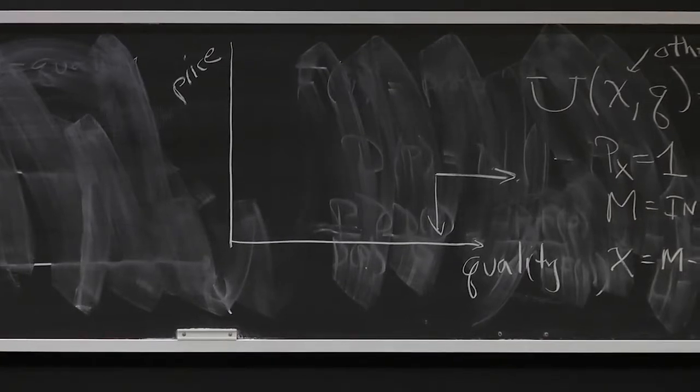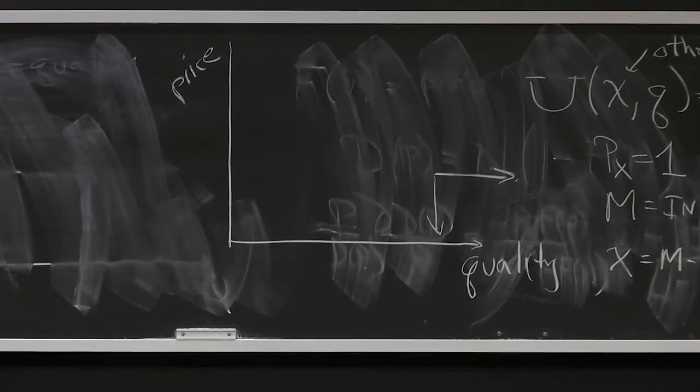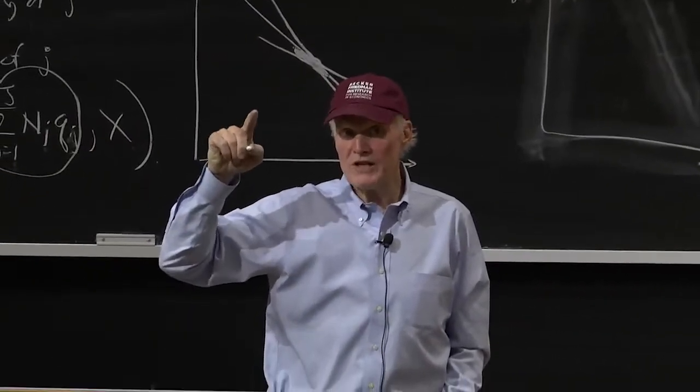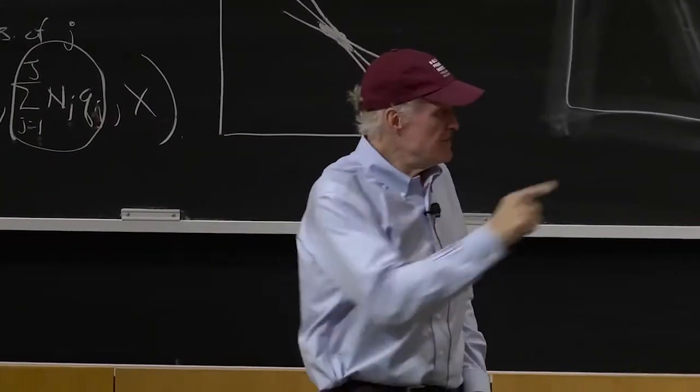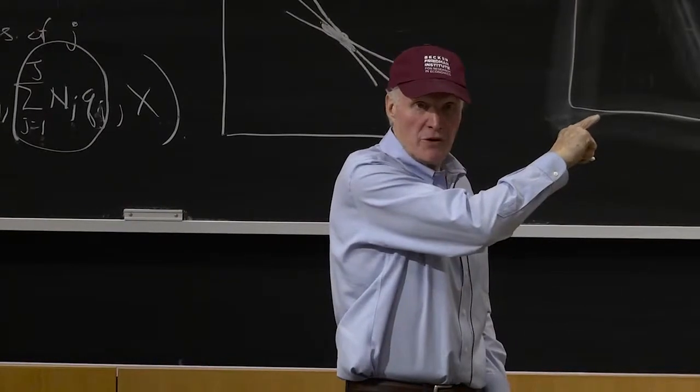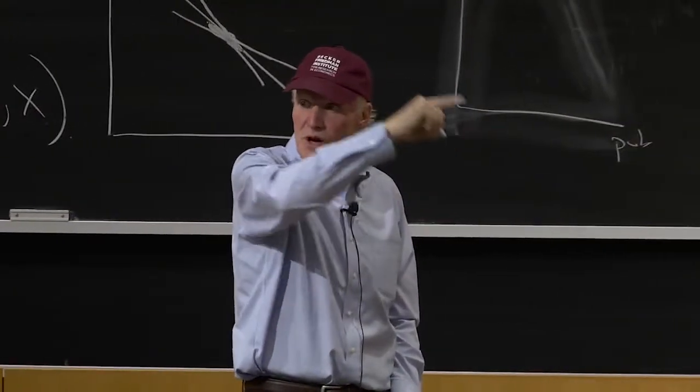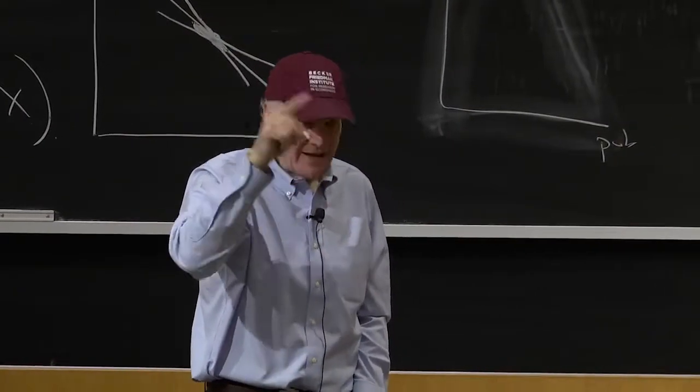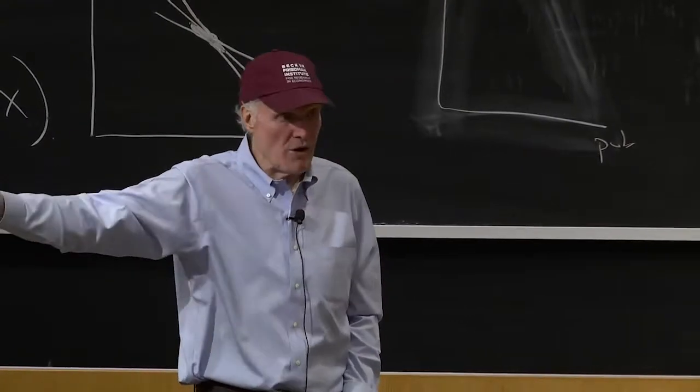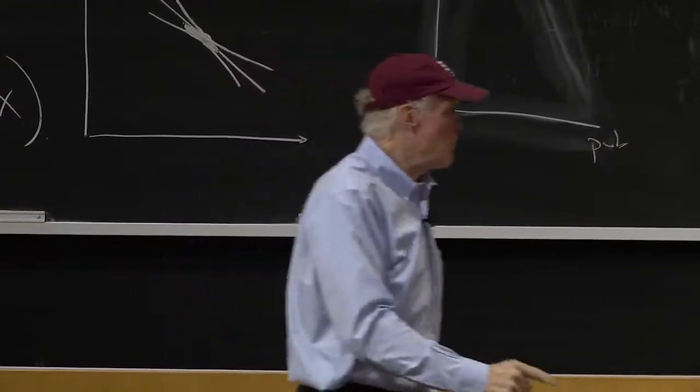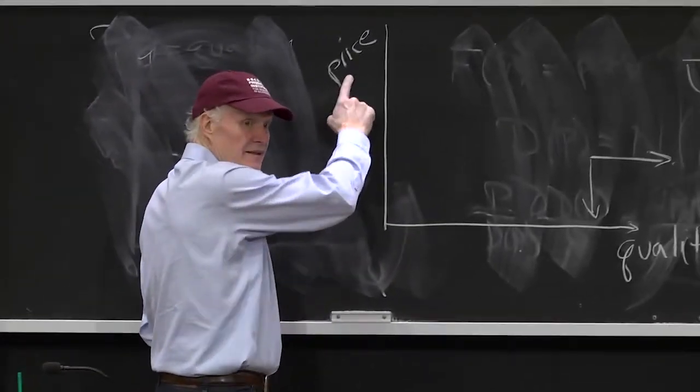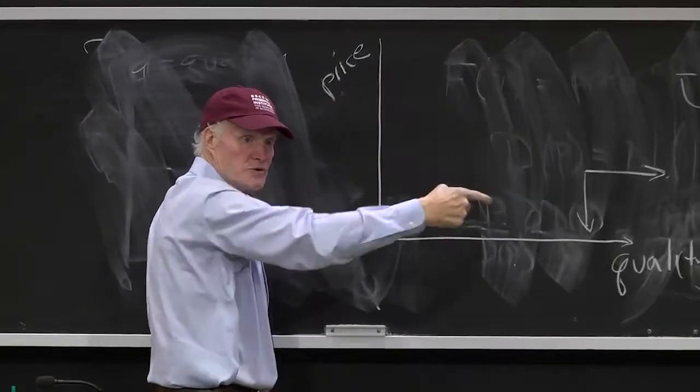Now, the reason this is, remember last time when we did the demand curve, we had this curve? Remember, that price was price per unit. This is the total price you pay. So clearly, your preference here is always lower price, and given the price you're paying, you want more quality. If I had put price per unit quality on this axis, then we'd have that U shape.